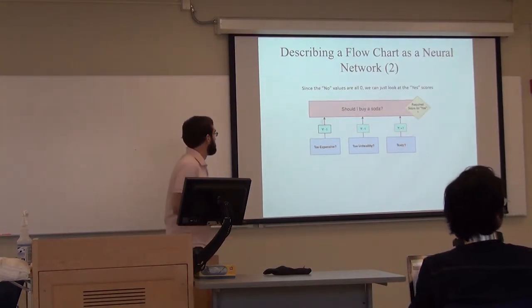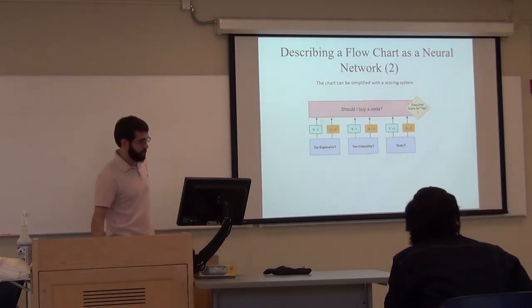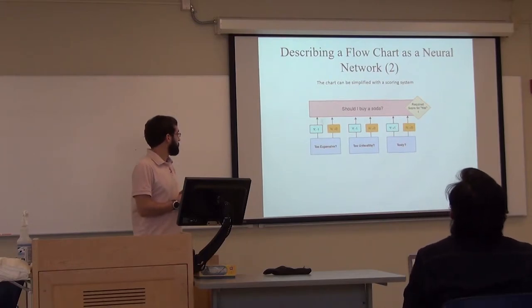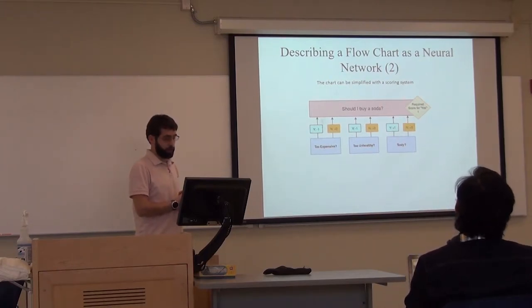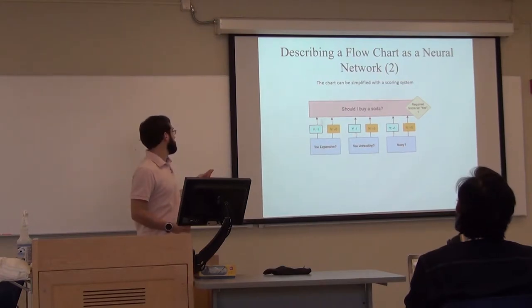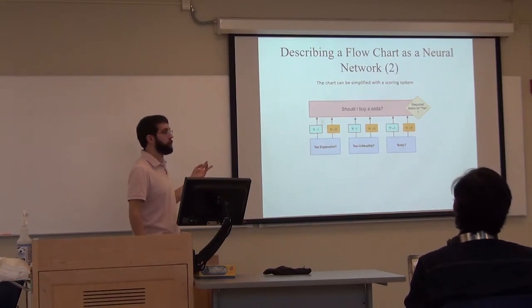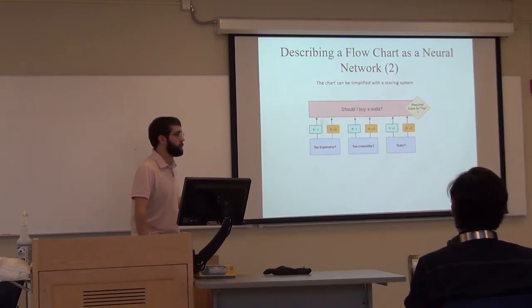A question about the neural network values. For these, the negative one means that it decreases the score. It works against buying a soda. I put the no answers there because there are two possible options, yes or no. But in all the cases, no doesn't have any influence, so I just said it's a zero since that's easier to simplify. Does that answer the question?